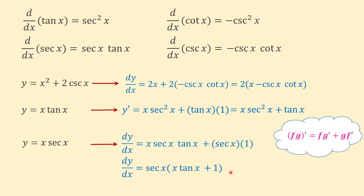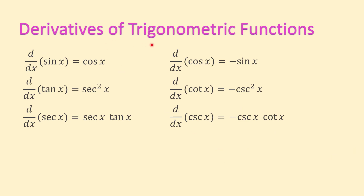Before I finish this video, let's look at the table of derivatives of trigonometric functions. Derivative of sine is cosine. Derivative of cosine is negative sine. Derivative of tangent is secant squared. Derivative of cotangent is negative cosecant squared. Derivative of secant is secant times tangent. And derivative of cosecant is negative cosecant times cotangent.